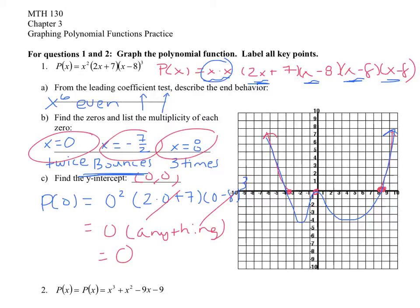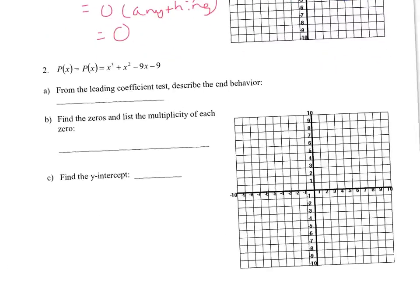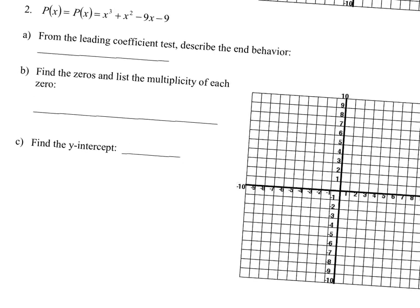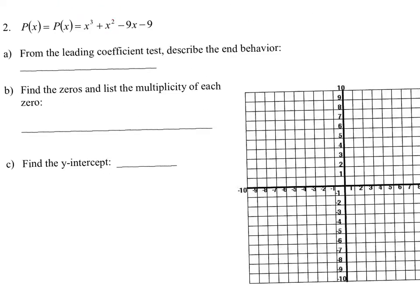Now for the second example — I wanted to give you one of each to show the difference in how polynomials can be written. The first one was in factored form; this polynomial is not factored, it's multiplied out. When it's in expanded form, the degree is the highest power you see — do not add them up. This is a third degree, which is like X cubed: it falls to the left and rises to the right. The leading coefficient is positive, so it matches X cubed.